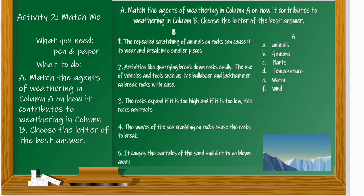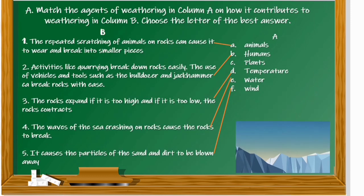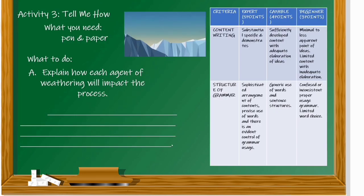In this activity, you are going to match the agents of weathering in Column A with how they contribute to weathering in Column B. Choose the letter of the best answer. For the last activity, you are going to explain how each agent of weathering impacts the process. The rubric is given to you as your guide.